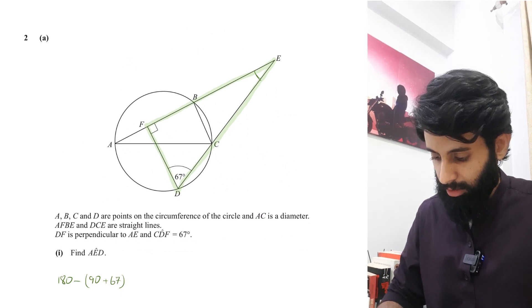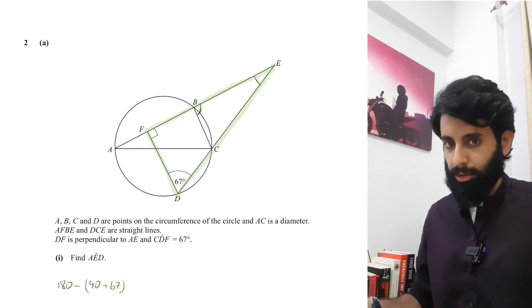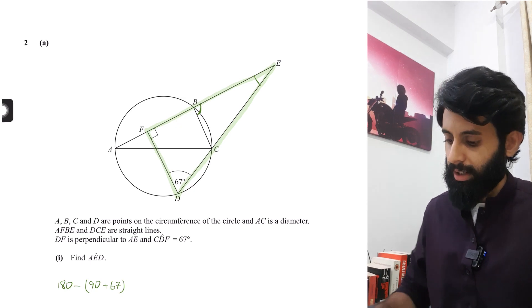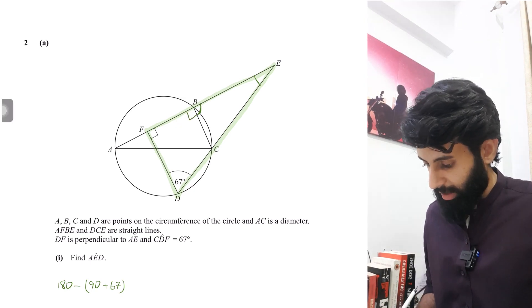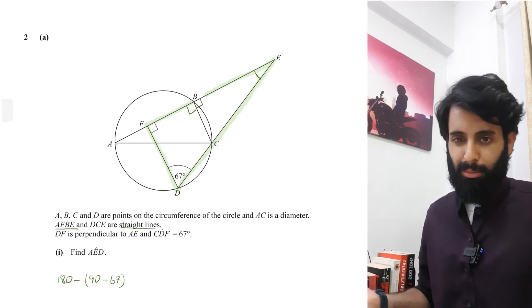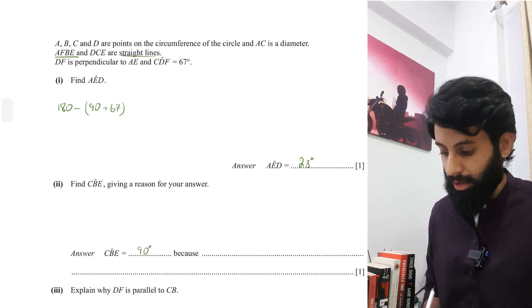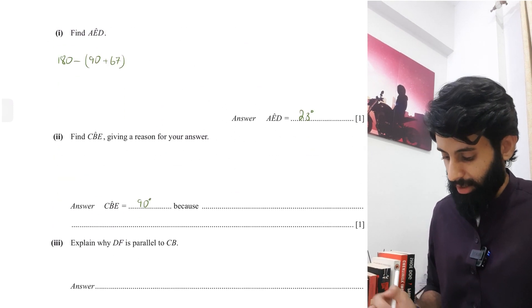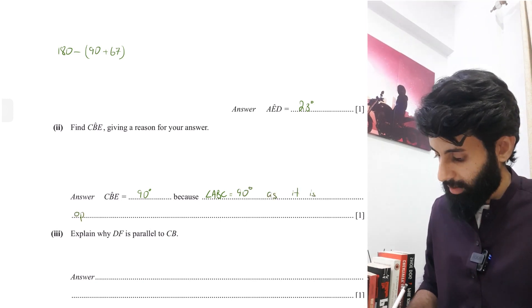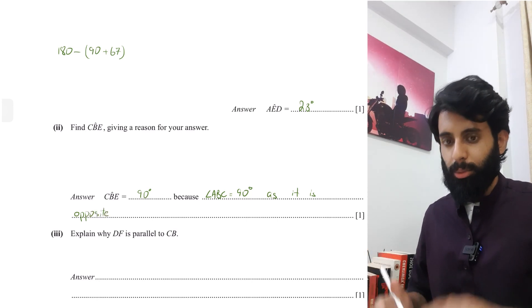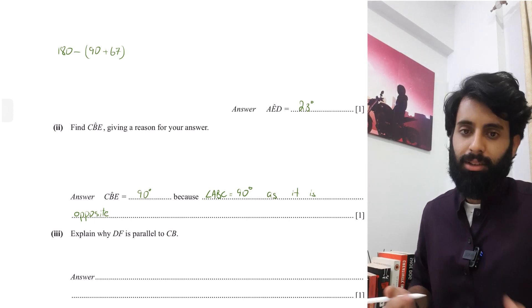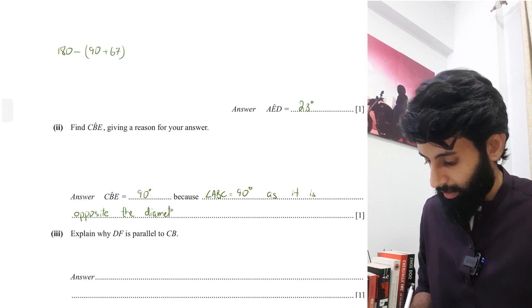Angle CBE — this should be a no-brainer. If you look at line AC, angle B is opposite to the line AC, which means it's going to be 90 degrees. The question states that AFBE is a straight line, so the angles sum to 180 degrees — 180 minus 90 gives 90 degrees. So CBE equals 90 degrees because angle ABC equals 90 degrees, as it is opposite the diameter. Be very specific: angle ABC is 90 degrees because it is opposite the diameter.